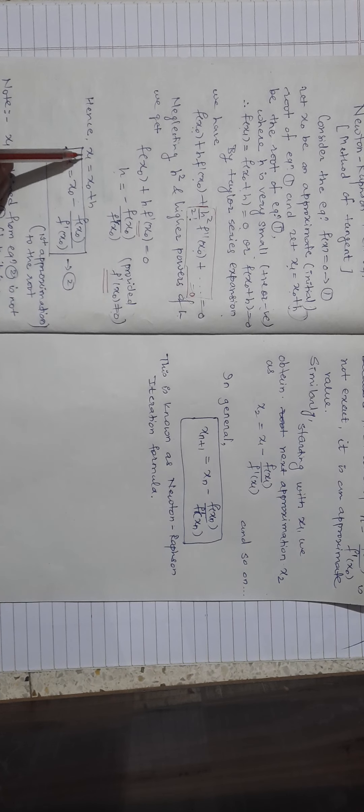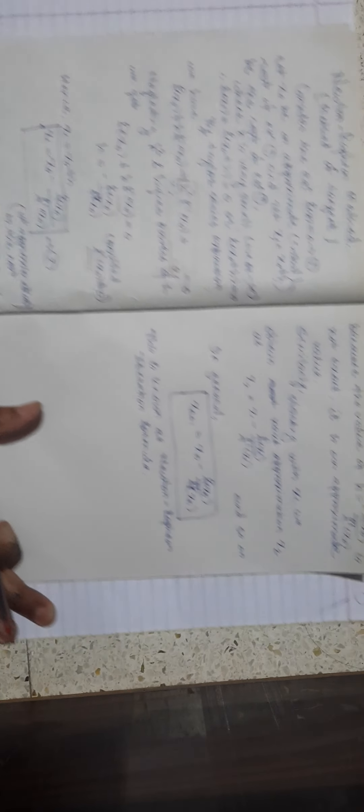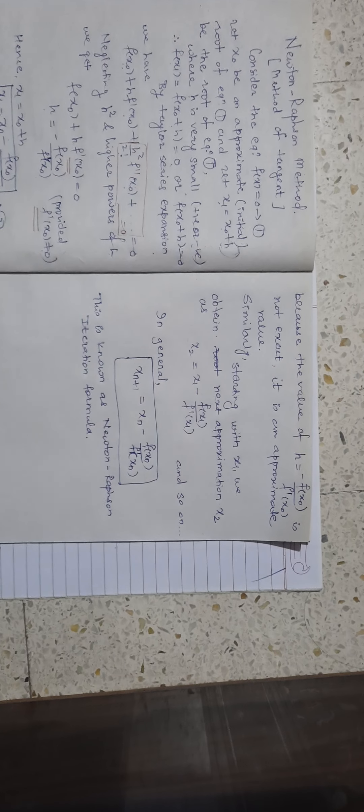From this equation we find h = -f(x₀) / f'(x₀), provided f'(x₀) ≠ 0. Since x₁ = x₀ + h, substituting the value of h we get our first approximation: x₁ = x₀ - f(x₀) / f'(x₀). This is our first approximation to the root using the Newton-Raphson method.